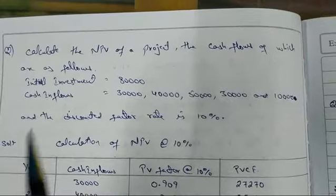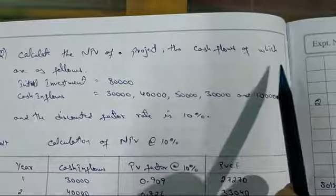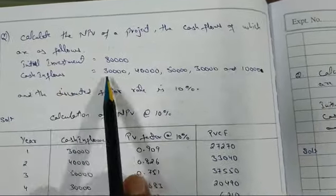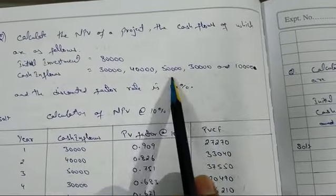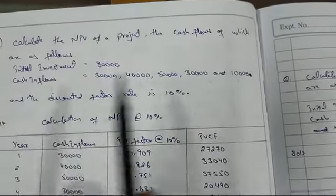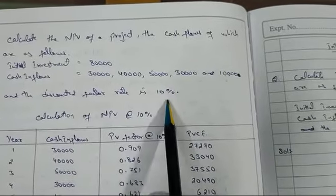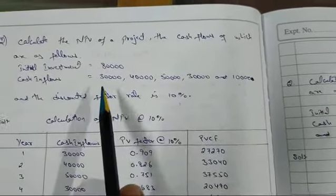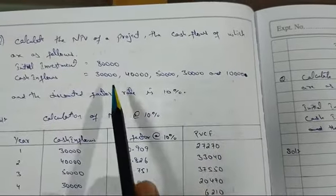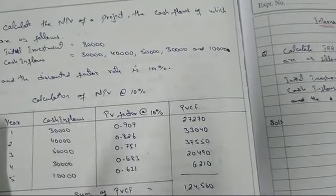Calculate the NPV of a project whose cash flows are as follows: initial investment is 80,000. Cash inflows are 30,000, 40,000, 50,000, 30,000, and 10,000 — one for each year from year one to year five. The discounted factor rate is 10 percent.